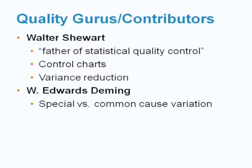Another one is Edward Deming. Edward Deming is a former statistics professor at NYU. He created the special and common cause variation and created the 14 points needed to achieve quality in an organization. Edward Deming also helped the Japanese to improve quality and productivity after World War II.